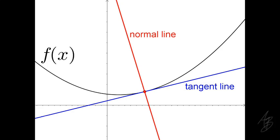We need to introduce the idea of a normal line. If we look at a picture of a graph, the function f of x is pictured as a curve — in this case a quadratic parabola. The tangent line is going to be the line that touches the curve at a single point and has the same slope of the curve at that point. The normal line is just the line through that same point but perpendicular to the tangent line. In the following examples we're going to find the equation of the tangent line and the equation of the normal line to a particular function.